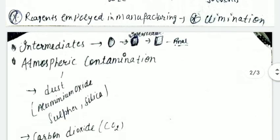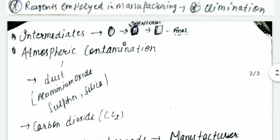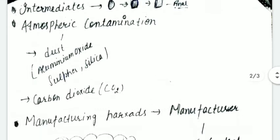Another source is atmospheric contamination. In our atmosphere, there are dust, aluminum oxide, sulfur, and silica. When these come into contact with the product, there are chances of contamination or impurities.